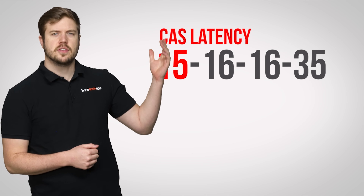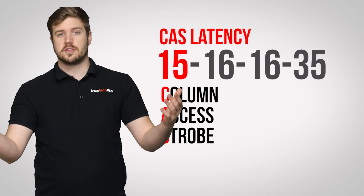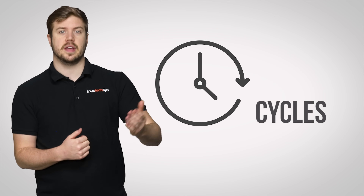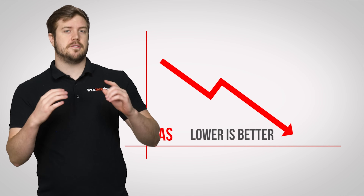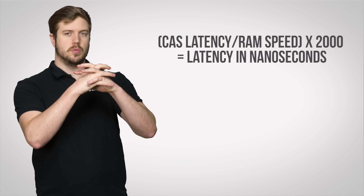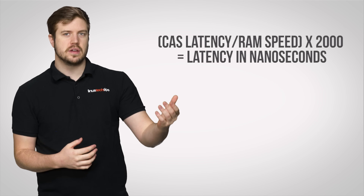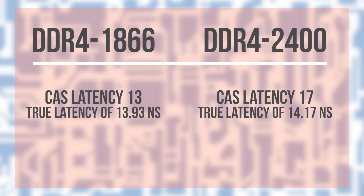Let's start with the first number in the string. This is called CAS latency. This is the time it takes for the RAM module to start responding to a request for data, measured in clock cycles. In general, a lower CAS latency is better. But because different RAM modules run at different clock speeds, you have to consider them together with the frequency to find the total real-world latency in nanoseconds using this formula. So slower clocked RAM can effectively be quicker if it has a lower CAS latency — something to keep in mind when buying your memory. Though remember, speed is still going to be more important, generally speaking.